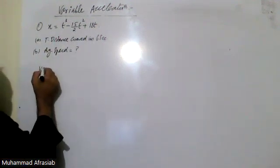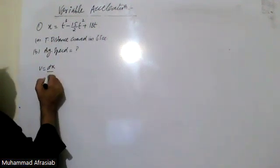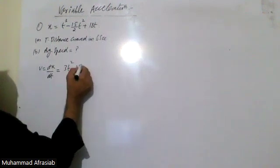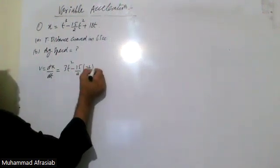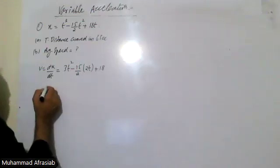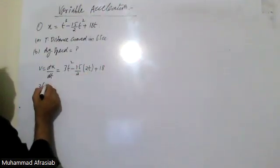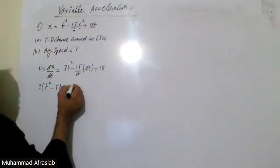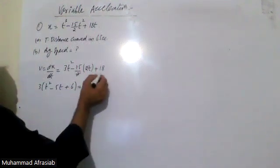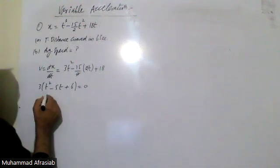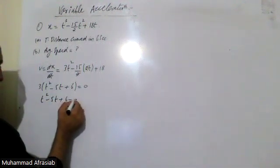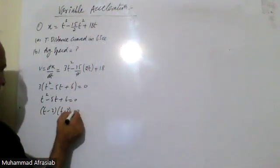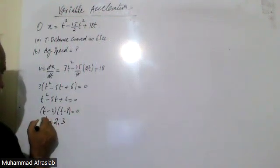So v = dx/dt = 3t² − (15/2)·2t + 18 = 3t² − 15t + 18. Taking 3 as a common factor gives t² − 5t + 6 = 0, which factors as (t − 2)(t − 3) = 0, so our t values are equal to 2 and 3.